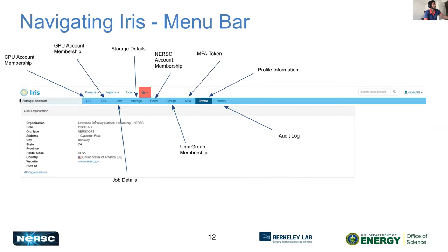On IRIS, on the main page you'll see a banner at the top. On the left-hand side it will show your name, your CPU and GPU account membership if you want to know about job details, storage, and roles — which are the NERSC accounts you belong to. Groups shows your Unix group membership. The MFA tab is where you set up MFA or add a new token, for instance if you get a new phone. Your profile tab shows your information and metadata.